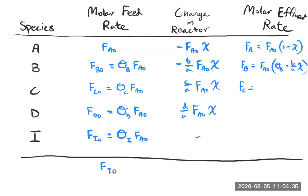And F D equals F A naught times theta D, plus D over A times conversion. And our molar flow rate of I hasn't changed. So it's still this expression. Let's go ahead and try to write the sum of what this would be.